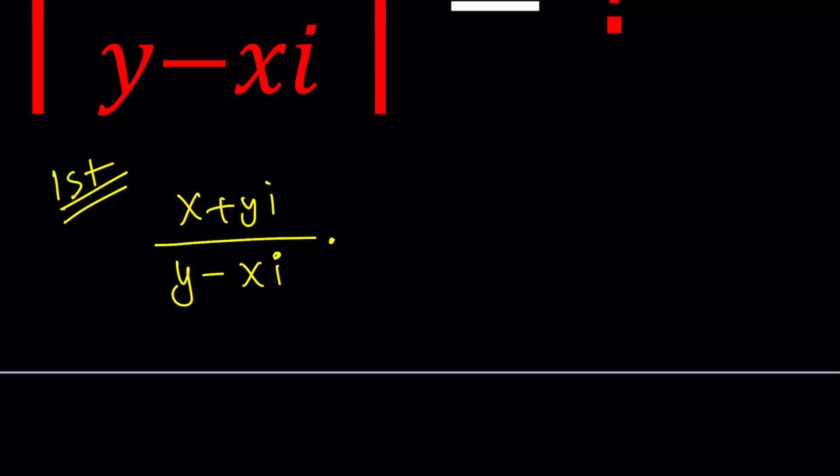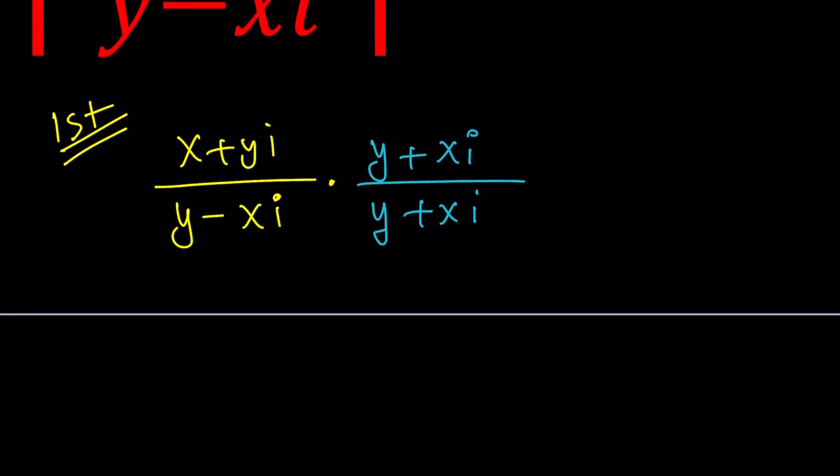So we're going to multiply by the conjugate. Look at the denominator, y minus xi, and its conjugate is going to be y plus xi. So we have to multiply the top and the bottom by that, and then just simplify by multiplying. We're going to multiply across the top and across the bottom. How do you multiply two complex numbers? You just distribute, and don't forget, i squared is always, always negative one.